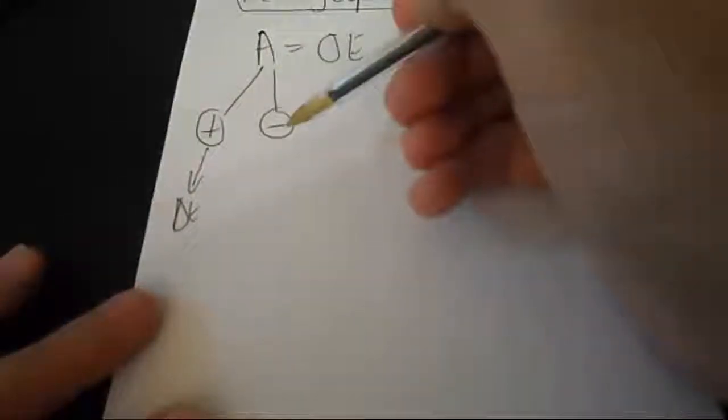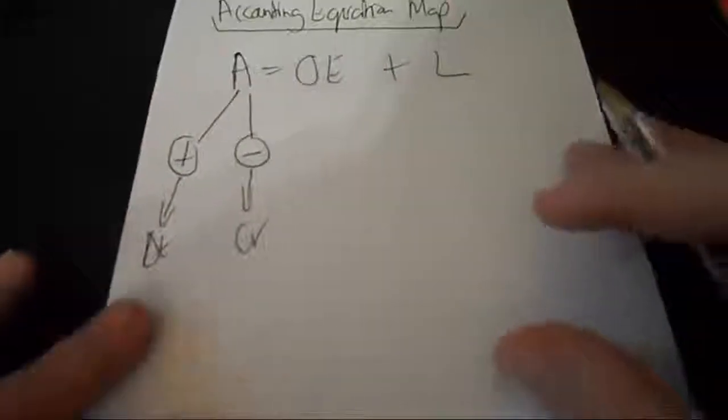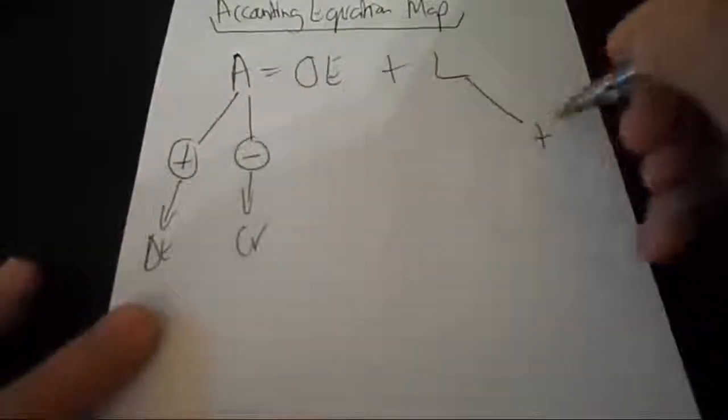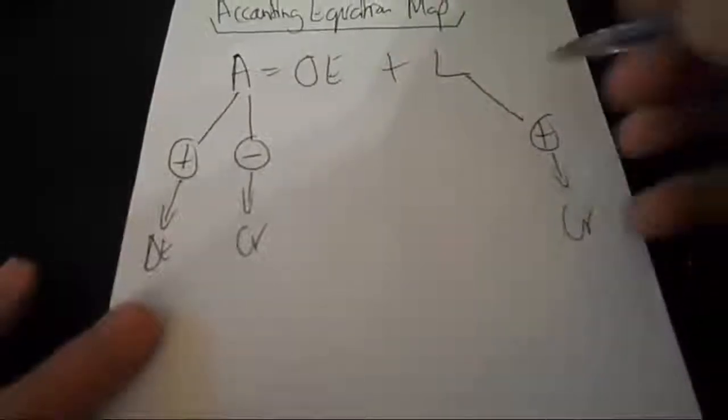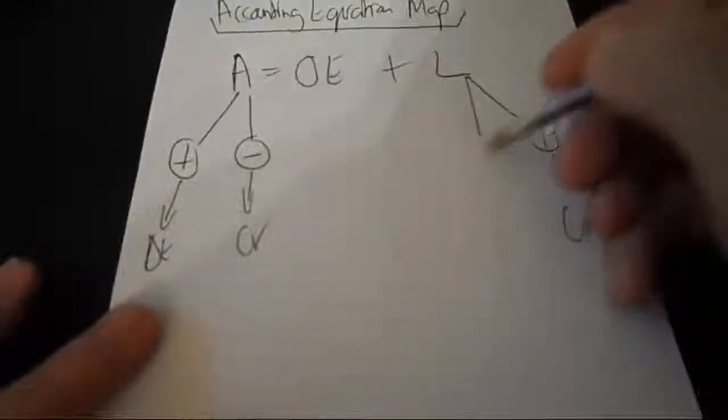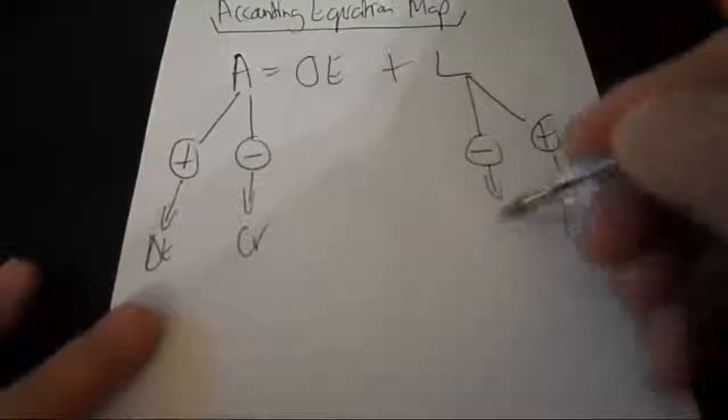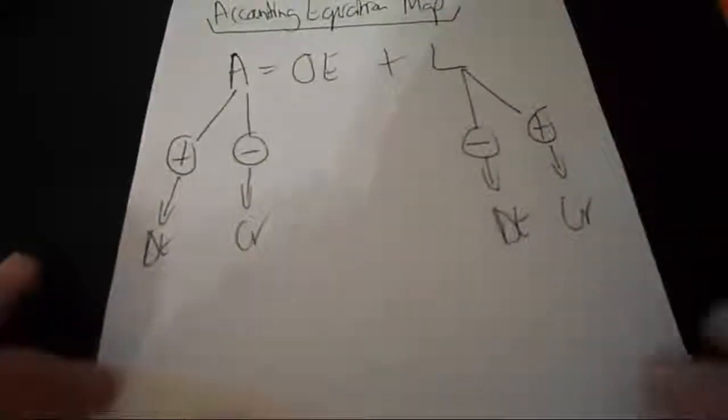Well, when an asset increases we will put that on the debit side, and when it decreases we will put it on the credit side. And when a liability increases we will post to the credit side, and then when a liability decreases we'll post it to the debit side.